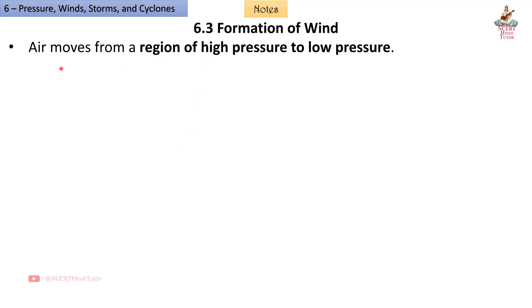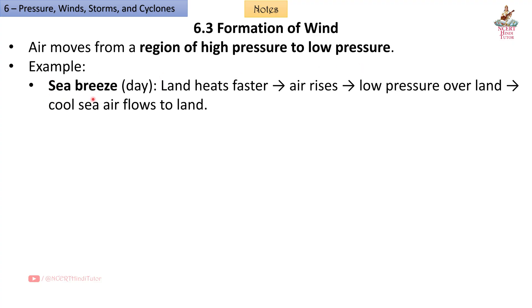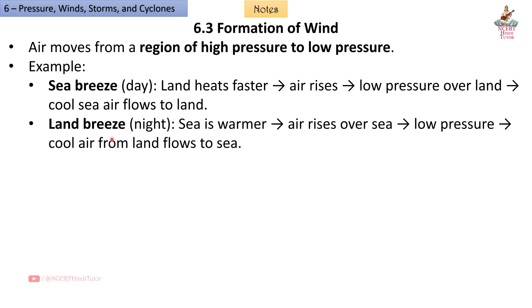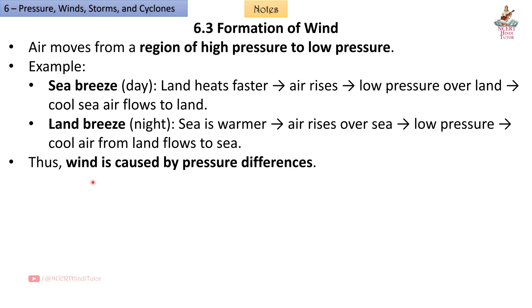We are not crushed because pressure inside our body balances atmospheric pressure. 6.3 Formation of Wind: Air moves from a region of high pressure to low pressure. Sea breeze (Day): Land heats faster, air rises, creating low pressure over land, and cool sea air flows to land. Land breeze (Night): The sea is warmer, air rises over sea, creating low pressure, and cool air from land flows to the sea.